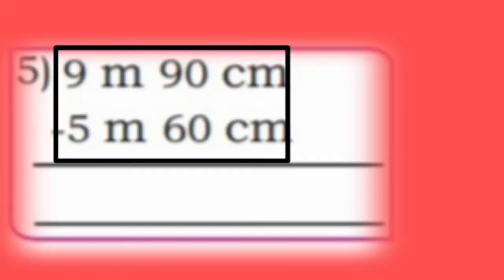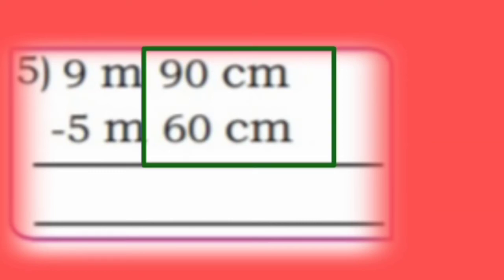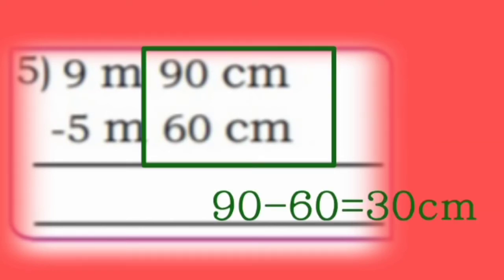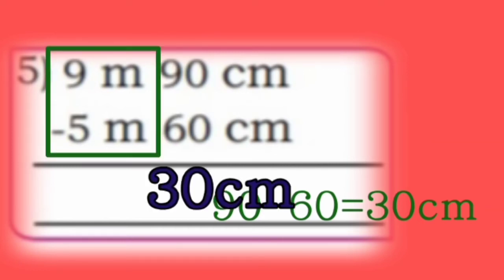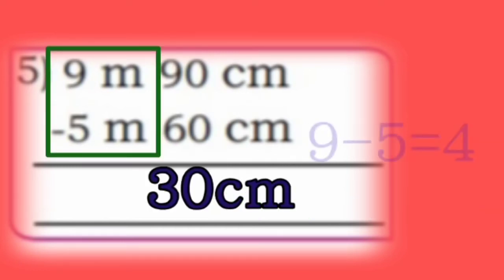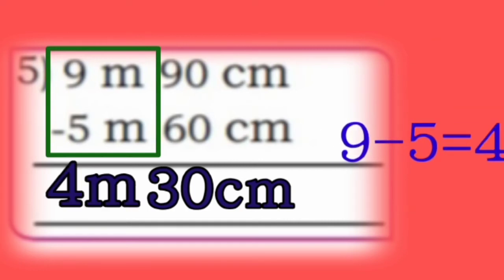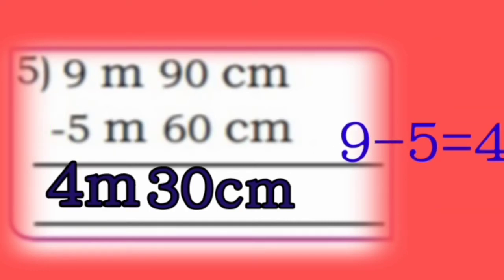Now fifth one: 9 meter 90 cm minus 5 meter 60 cm. First subtract centimeters: 90 minus 60 is 30 cm. Next subtract meters: 9 minus 5 is 4 meter. So the answer is 4 meter 30 cm.